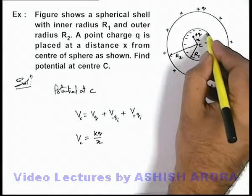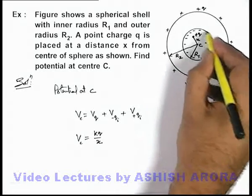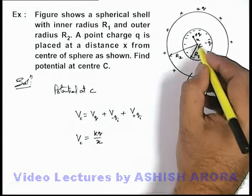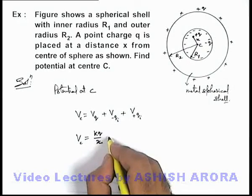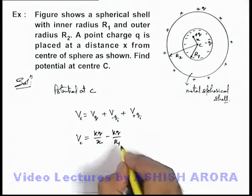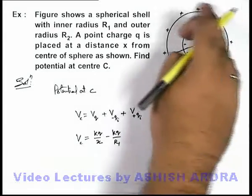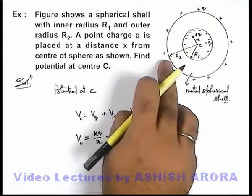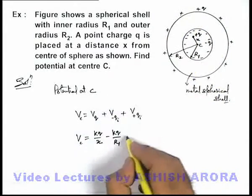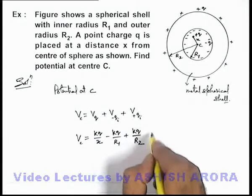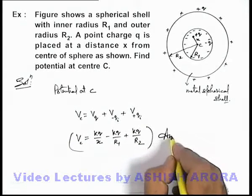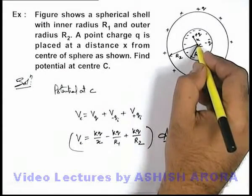And due to this minus q charge, as all charges are located at a distance r1 from c, the potential at c can be written as minus kq by r1. And due to all these outer charges which are located at a distance r2 from c, the potential can be given as plus kq by r2. This will be the answer to this problem, which is the potential at the center of this metal spherical shell.